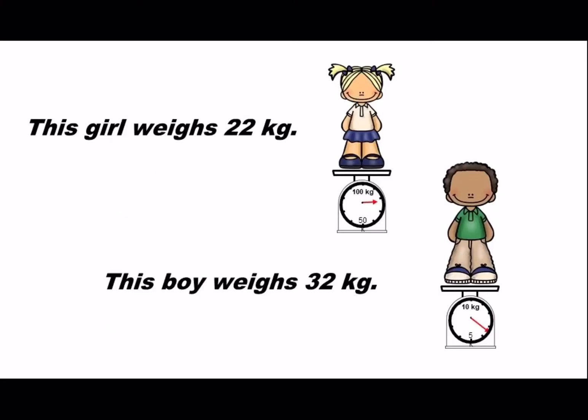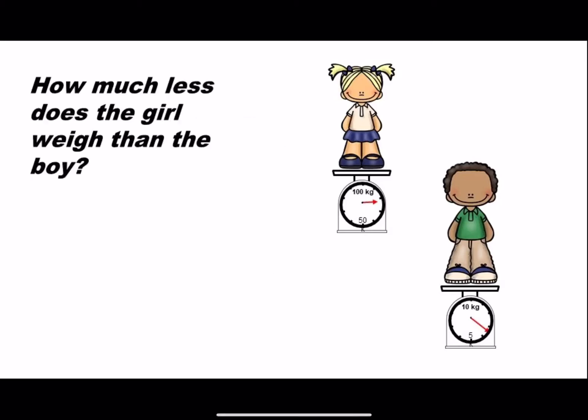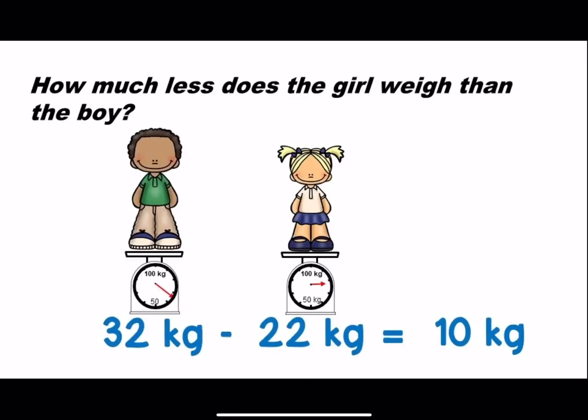This girl weighs 22 kilograms. This boy weighs 32 kilograms. How much less does the girl weigh than the boy? We need to find the difference in the weight of the boy and the girl. 32 kilograms minus 22 kilograms equals 10 kilograms. The girl weighs 10 kilograms less than the boy.